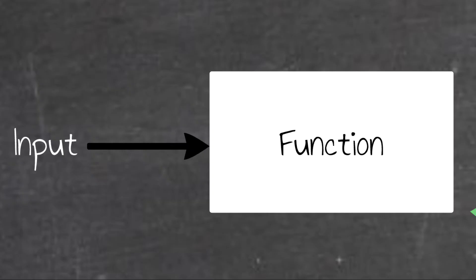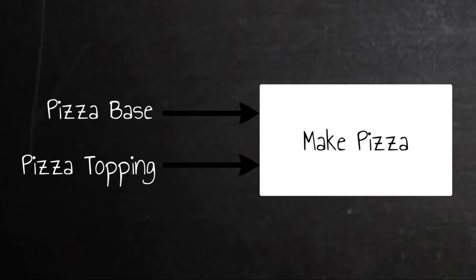For example, I always find it easy to refer to the process of cooking something to explain things like inputs, outputs, mechanisms, and controls. So if we considered the function make pizza, then quite crudely put, pizza base would be one such input, and pizza topping would be another. These inputs flow into our function.